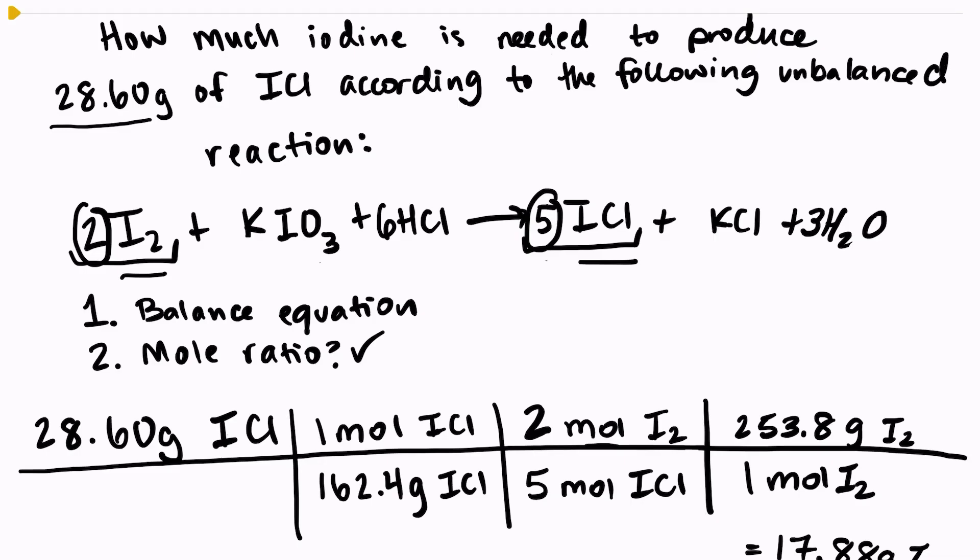All that we have to do is go from grams into moles, use our molar ratio using the balanced equation, and then one more conversion from moles into grams. And that solves the problem. Again, it's really easy as long as you're staying organized, and you can see that all of your units cancel out.